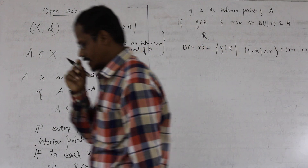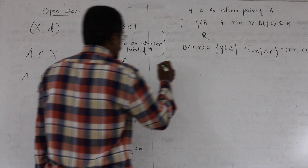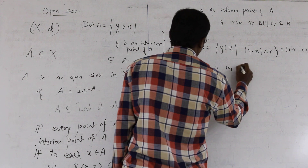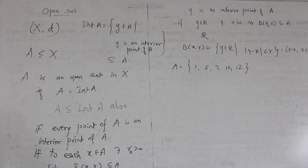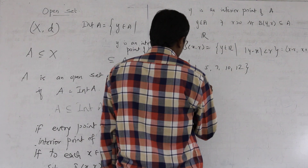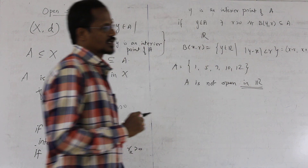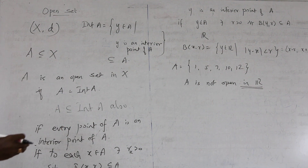Now let us look at some examples. Take the first set A = {1, 5, 7, 10, 12}. We already know that none of the points in A is an interior point of A. Therefore A is definitely not an open set — A is not open in R with the usual metric.